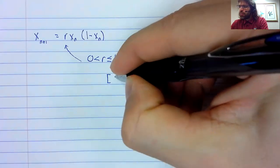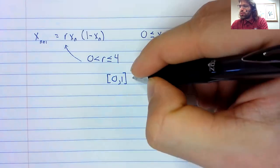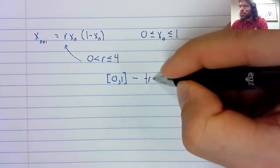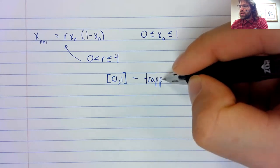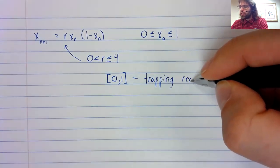is that we're making the interval from zero to one be a trapping region.